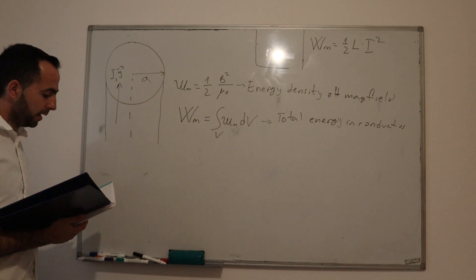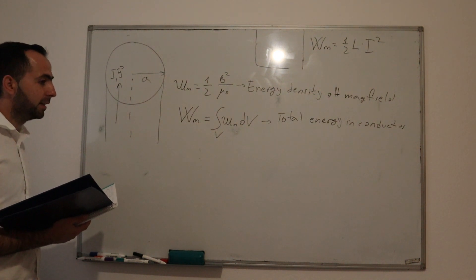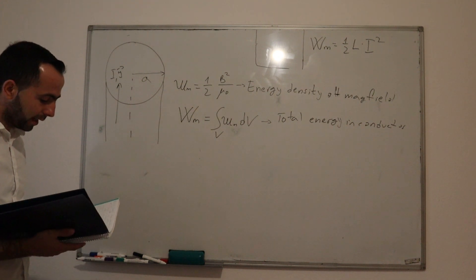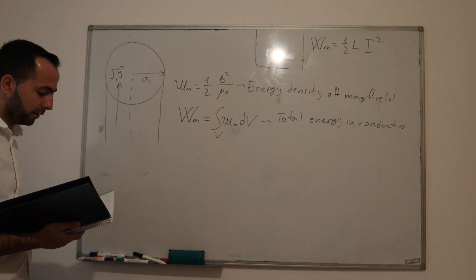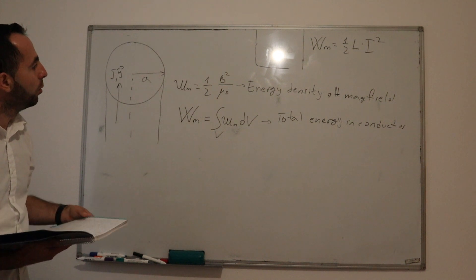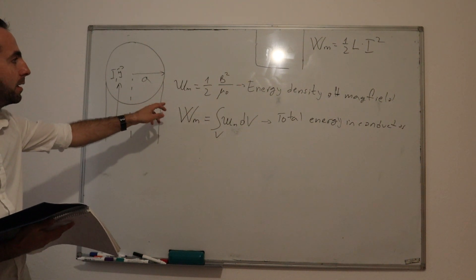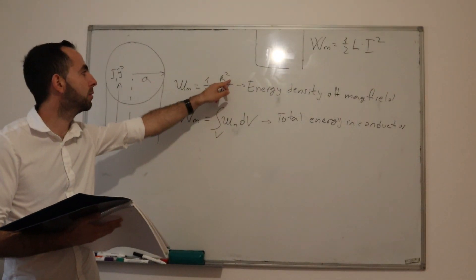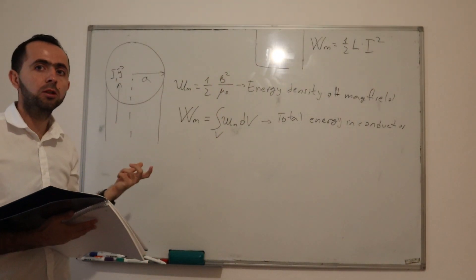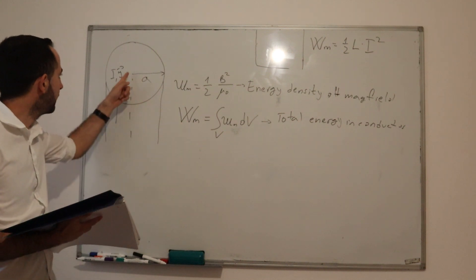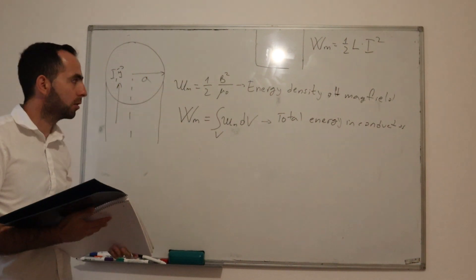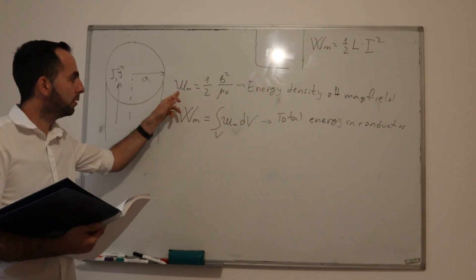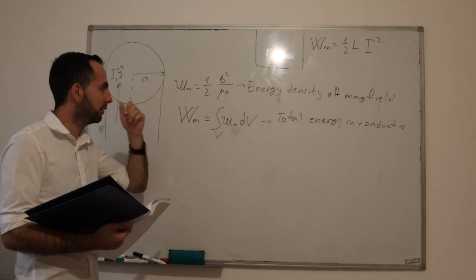We need to determine energy of magnetic field inside a conductor and inductance of conductor. How do we calculate energy of magnetic field inside a conductor? First, we must calculate energy density of magnetic field, which is calculated with this formula. We need to find our B as a function of R, as a function of distance from the center of our conductor. Then we simply do the volume integral of energy density of magnetic field.